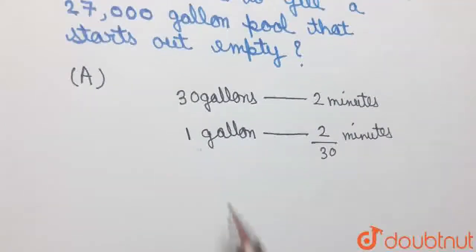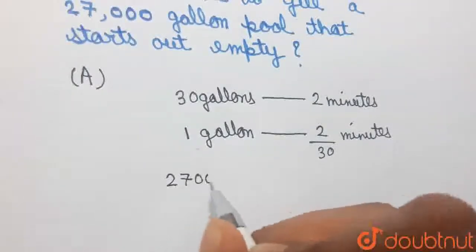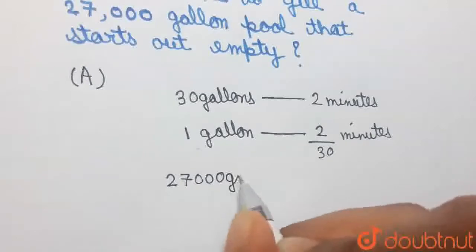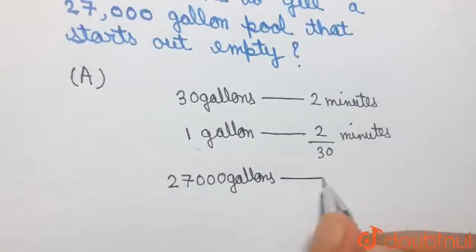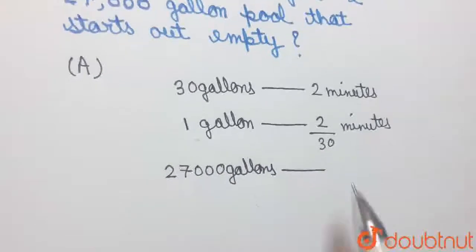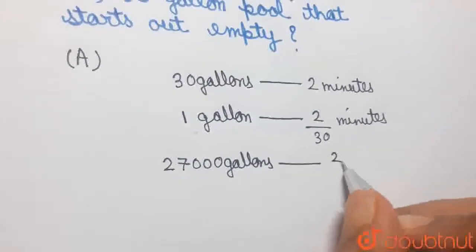Hence, in order to supply a volume of 27,000 gallons of water, the time that the inlet pipe will take will be given by 2 by 30 into 27,000, because 27,000 has to be multiplied.